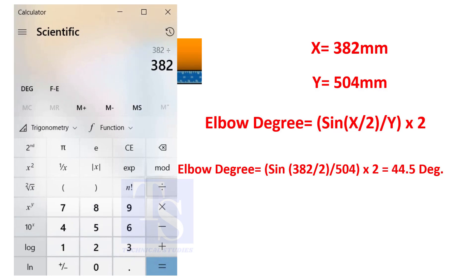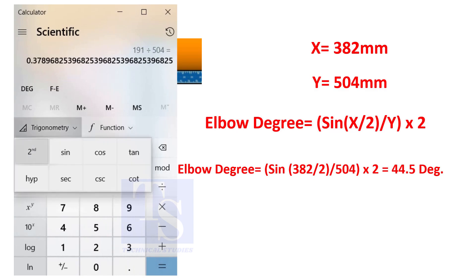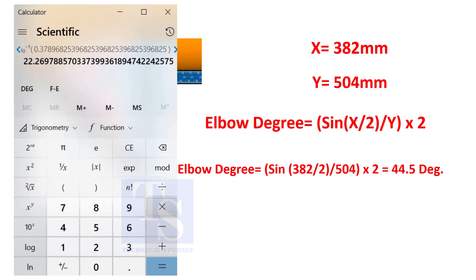You can try this method on pipe spools to measure the distortion due to the welding. So, the degree of the elbow is 44.5.